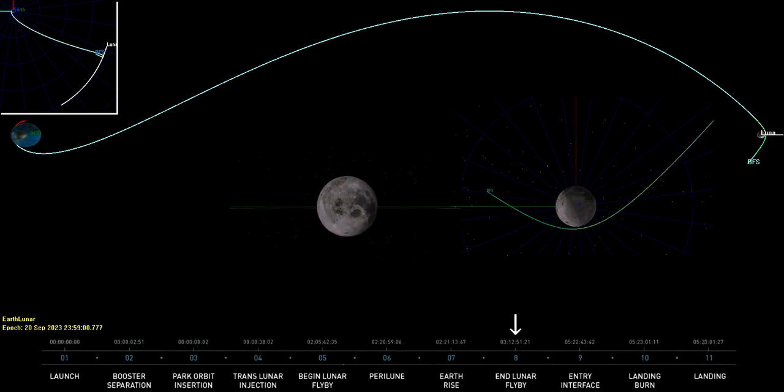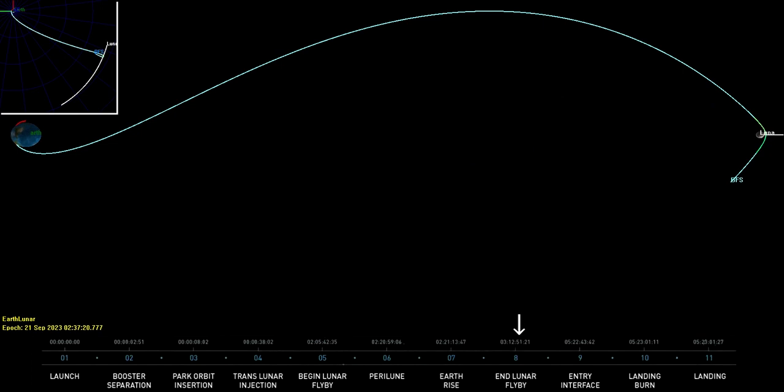Ten hours after the flyby, the vehicle is now on its way back to Earth. But the moon has perturbed the orbit so that it now intersects Earth's surface at a suicidally steep flight path angle of 75 degrees.